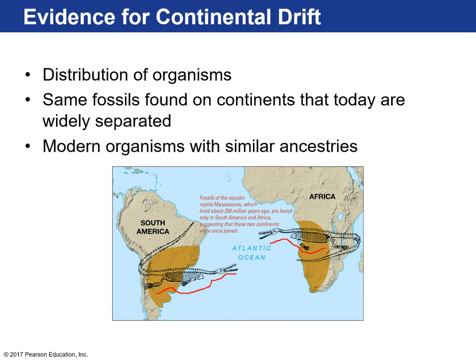The question is: these fossils over 200 million years old — the exact same species — are found in two different continents. Think about the different organisms that exist today in South America versus Africa. Do you find giraffes in South America? No. Do you find llamas in Africa? No. When organisms are separated by major oceans, there tends to be a diversification, and their differences become great. So how is it possible that the same exact species existed in two continents separated by an entire ocean?